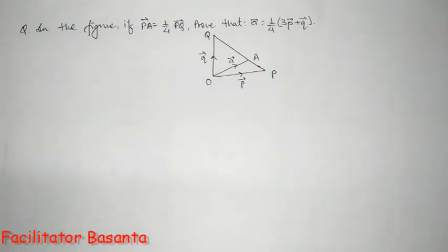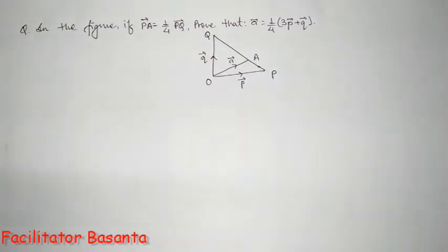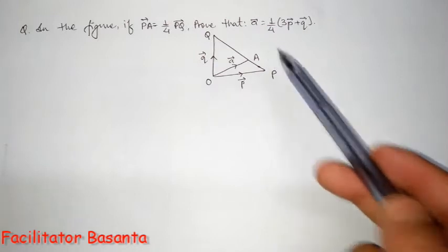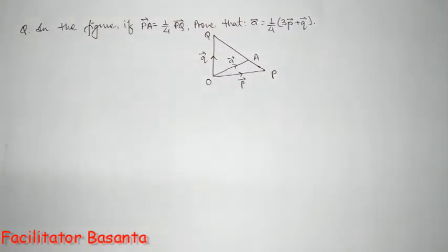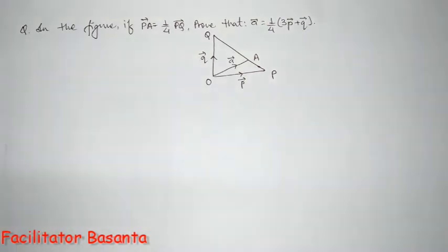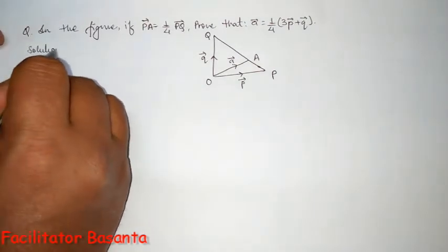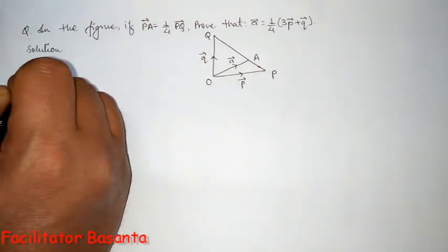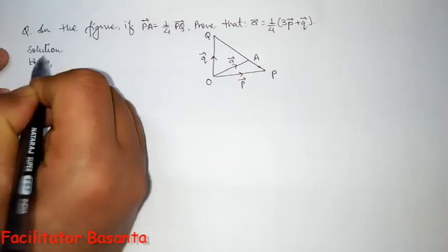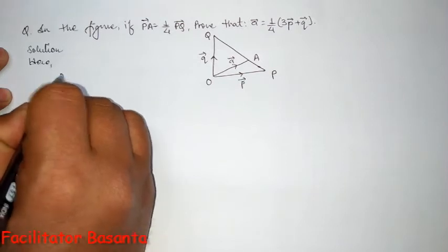In the figure, if PA is one-fourth of PQ, we need to prove that a vector equals one-fourth of 3p vector plus q vector. Solution: Here, see in the given figure it's given as...